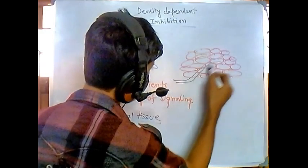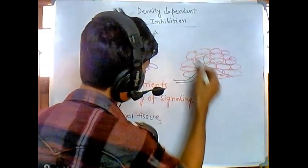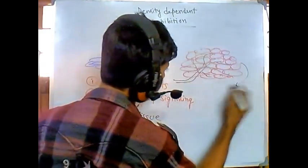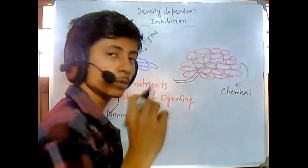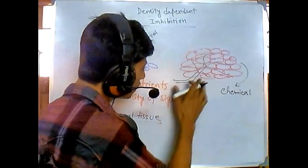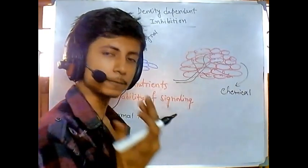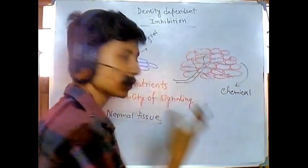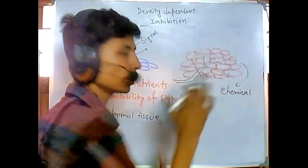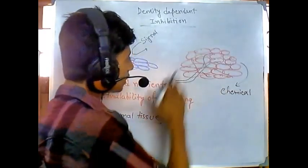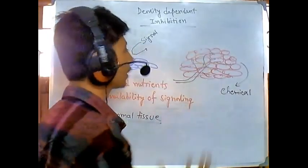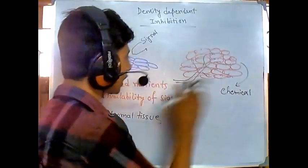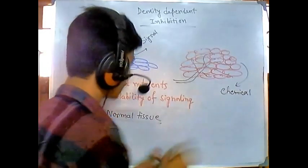They secrete some chemical factors, which guide these different blood vessels to come and grow over this particular tumorous region. That is why they are getting the nutrient sources, that is why they are getting the oxygen, and they continue to live on. That is the difference between the cancerous cell and a normal cell.